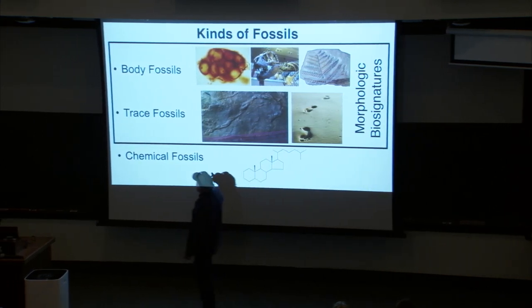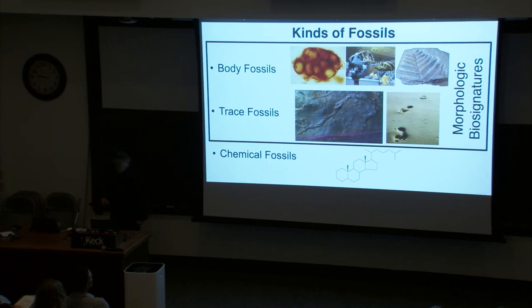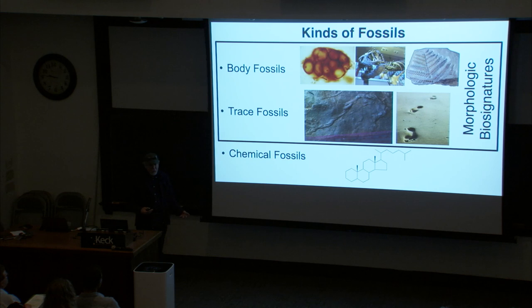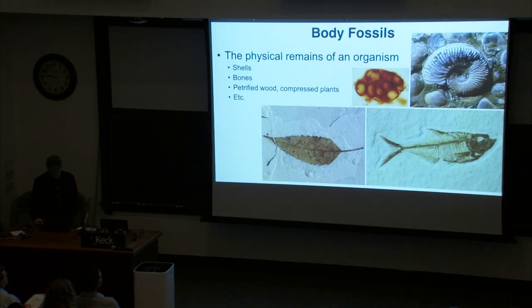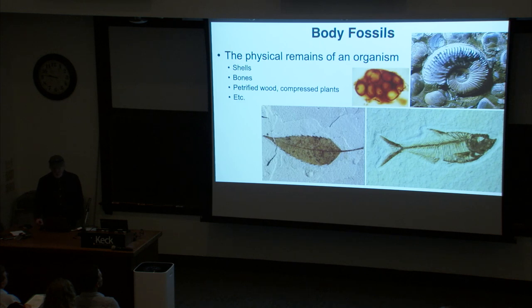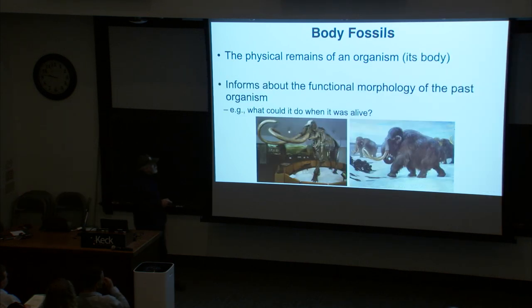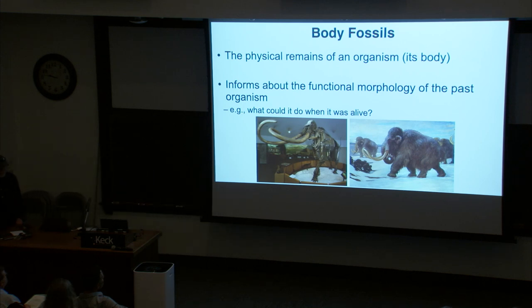I focus on body and trace fossils, and I consider these morphologic biosignatures — I also sometimes call them structural biosignatures because it's a shape. But as Karen alluded to, shapes can be deceiving. A body fossil is literally the physical remains of an organism: a shell, a bone, something like petrified wood, or even microscopic fossils — probably some kind of cyanobacteria, but we don't know for sure. These inform about functional morphology: what could the organism do when it was alive? You can look at the shape and then discern its function, or look at modern organisms to help.